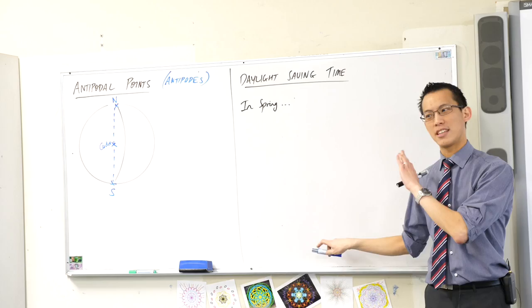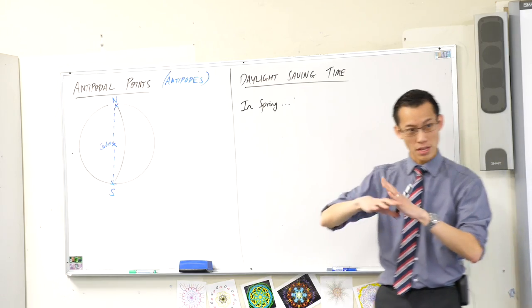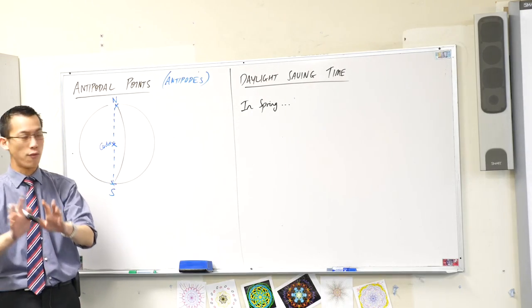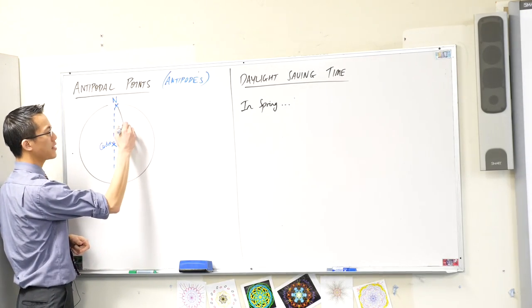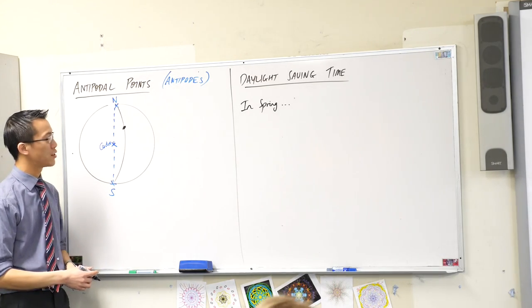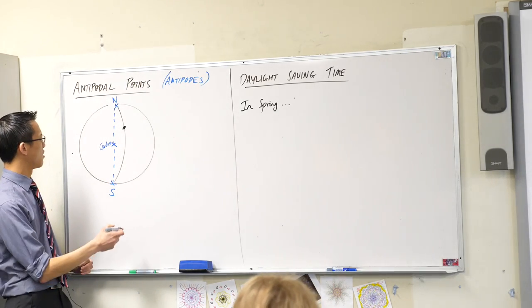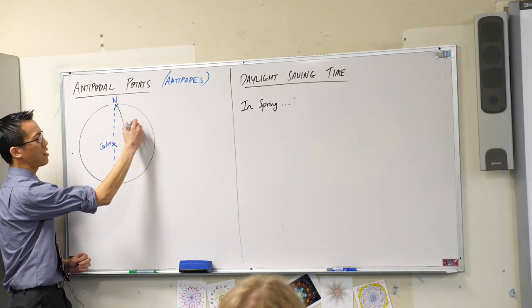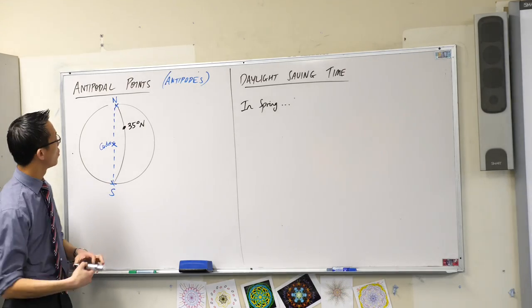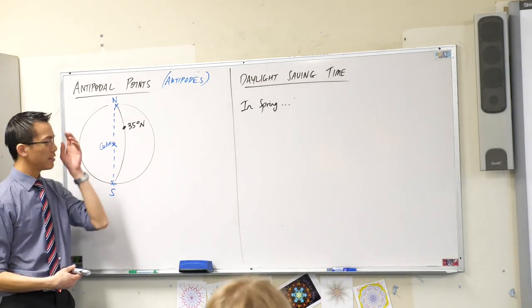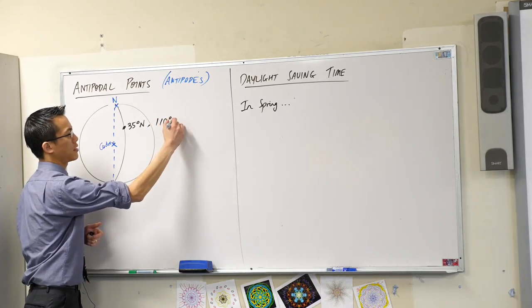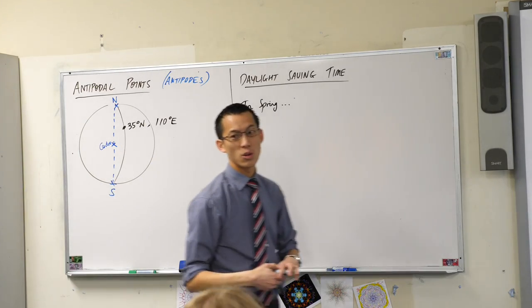So if that's what antipodal points are, how do you find them if they're not so easy like the North and South Pole? For instance, if I said there was a point on the surface of the Earth, I'd say something like 35 degrees north. There's your latitude and let's just say it's 110 degrees east. There's your longitude.